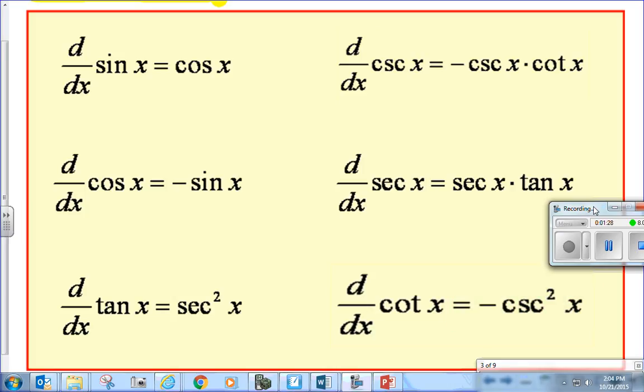So look at, if there's a cosecant in the derivative, it's negative. If there's a secant in the derivative, it's positive. In fact, if it begins with a C, the derivative of it will be negative. Begins with a C, negative. Begins with a C, negative. Begins with a C, negative.